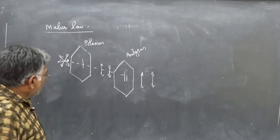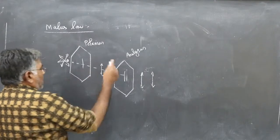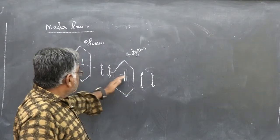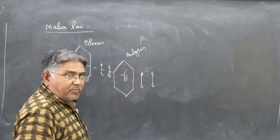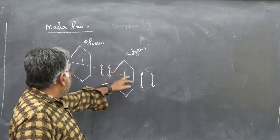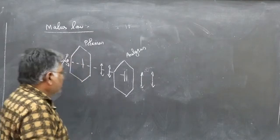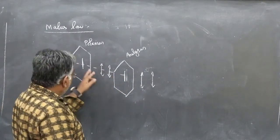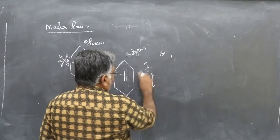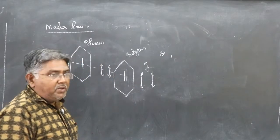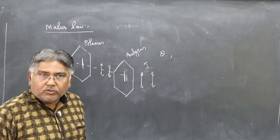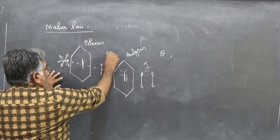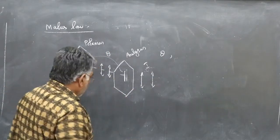Now, suppose you are asked to draw a diagram showing the variation of intensity of light after it has passed through both polaroids. We want to draw the graph between the intensity and the angle between the two transmission axes (also called pass axes). If we take that angle as theta and the intensity as I, you may be asked to draw the graph of I versus theta.